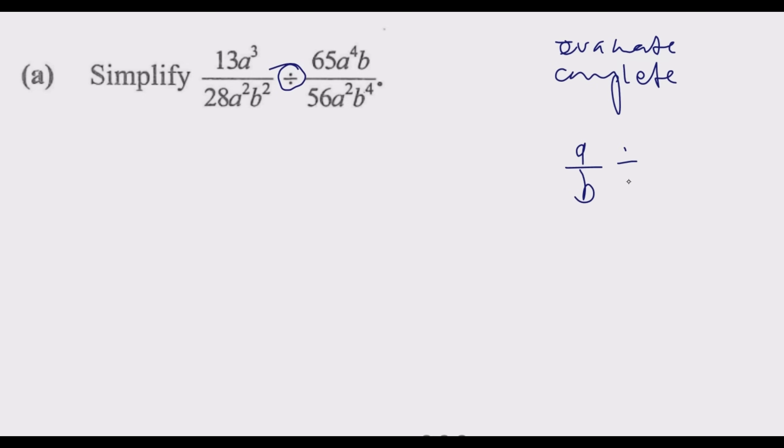To answer this question, we use this principle: a/b divided by c/d is the same as a/b, then we introduce multiplication, then we swap c and d. So we have d on top now over c.